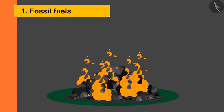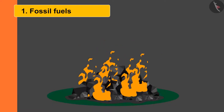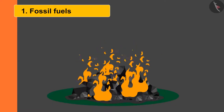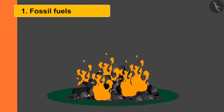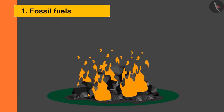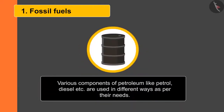Coal is the largest source of carbon. When coal burns in air, it reacts with oxygen present in the air to form carbon dioxide. Various components of petroleum like petrol and diesel are used in different ways as per their needs.